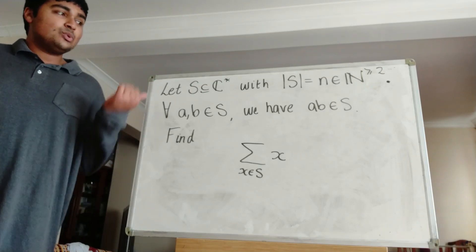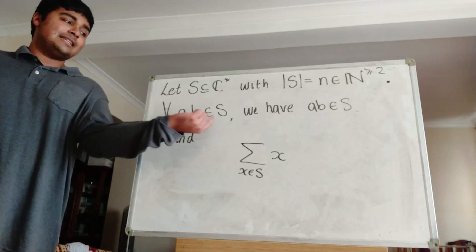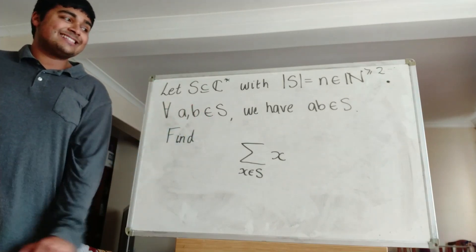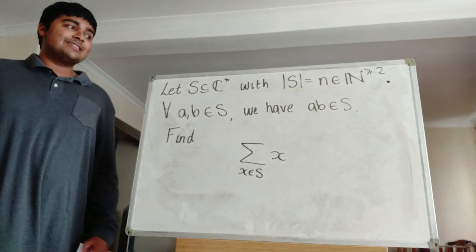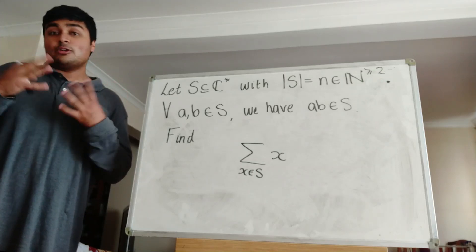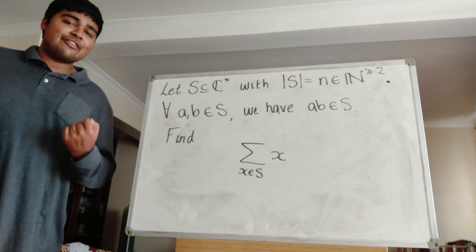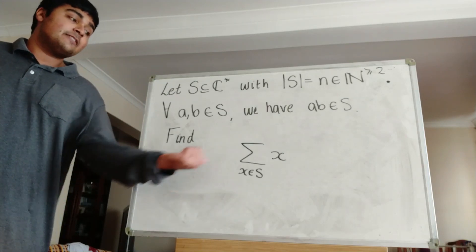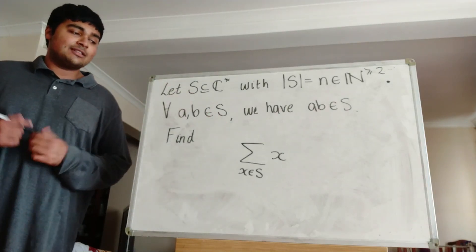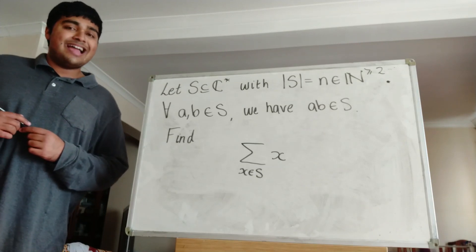And then S also has the property that for any two numbers in S, so any A and B in S, we have that the product of A and B is also in S. So take any two elements in S, and they could be the same element, multiply them together, and you're also going to get another element in S. We want to find the sum of the elements in S, so the sum of X in S of X.